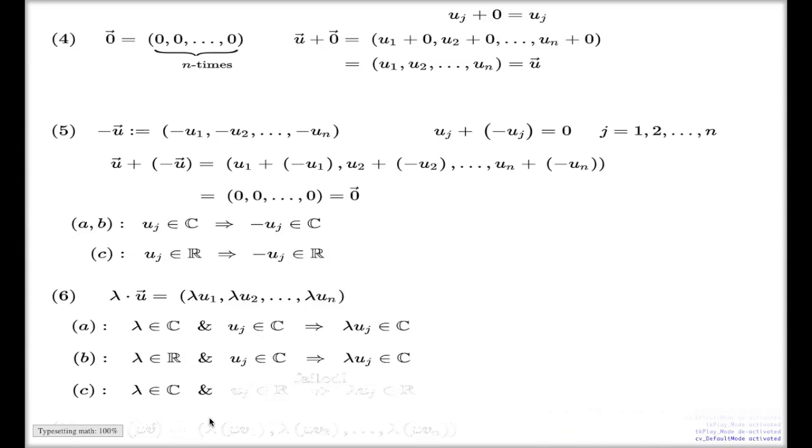But in case of example c, you have this setting, entries from real numbers, and the scalar is a complex number, and this time, you no longer have it. Because if you multiply a real number by a complex scalar, it is not necessarily a real number as a result. So this time, this one is failed.